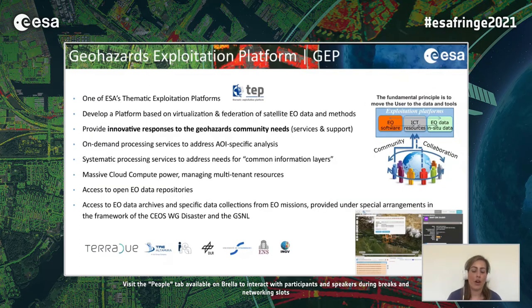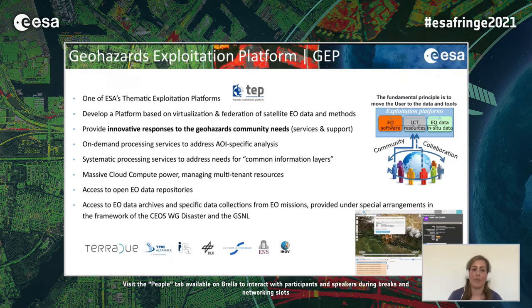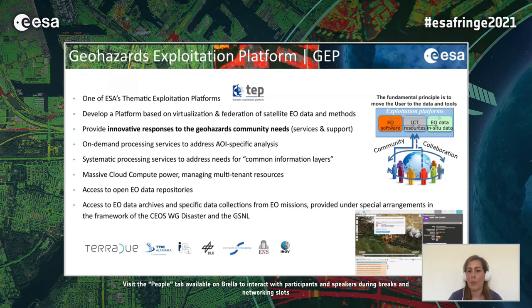Most CEOS Working Group Disasters activities focus on the provision of satellite Earth observation data, while the Geohazards Lab is basically a platform that provides data access in an online processing and e-collaboration environment for the assessment of geohazards and their impact. The main pillar of the Geohazards Lab is the Geohazards Exploitation Platform of ESA — shortly called GEP — which is one of ESA's thematic exploitation platforms developed based on a federation of satellite EO data and methods, combining on-demand processing services, systematic data-driven services, massive cloud computing power, and access to open EO data archives.